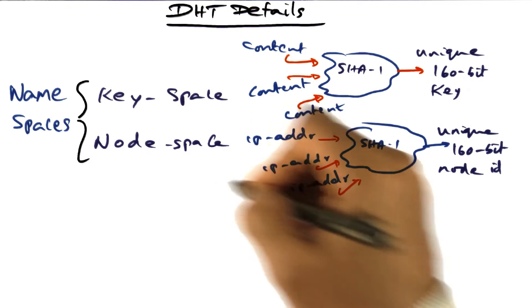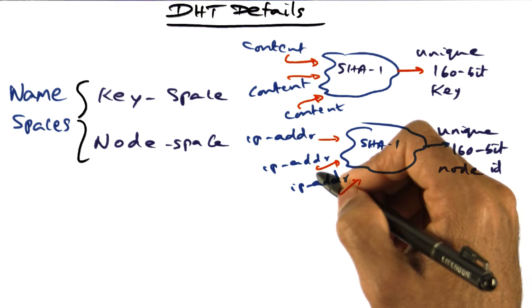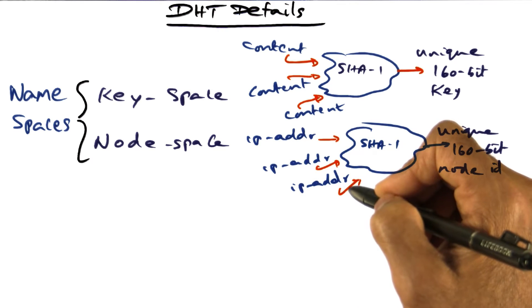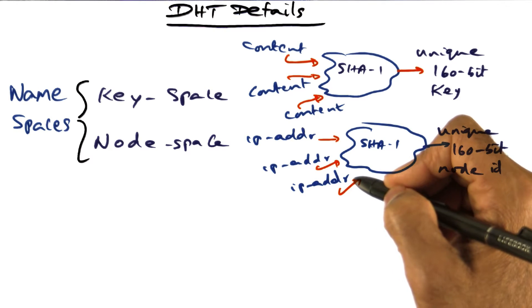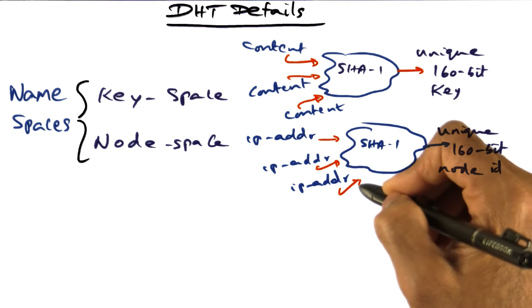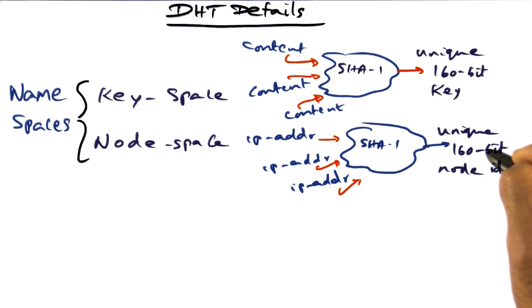The second namespace we have to deal with is the node space. What we are doing is we are creating an SHA1 hash of IP addresses of nodes that want to share content. So let's say that me and my buddies form a social network and all our IP addresses, we're going to use this algorithm to encode them into this 160-bit node ID.